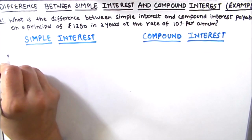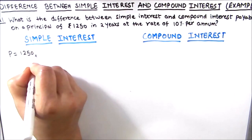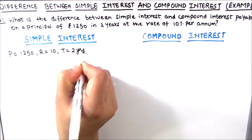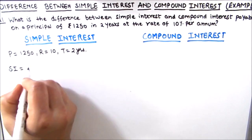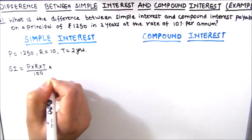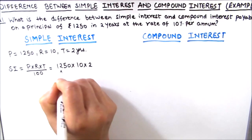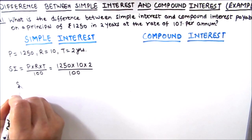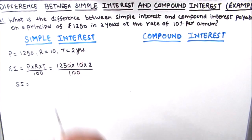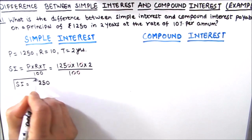For finding simple interest, our principal amount will be the same for all the years, which is 1250. Rate of interest will be 10% and time is two years. By using the formula for simple interest — principal times rate of interest times time divided by 100 — and substituting the values: 1250 times 10 times 2 divided by 100. These two zeros get cancelled with the other two zeros, so 125 times 2 equals rupees 250. This is the simple interest at the end of two years.